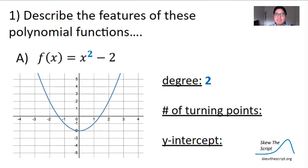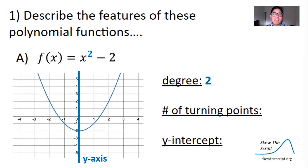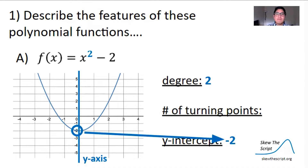Now we'll need the graph to find the number of turning points and the y-intercept. In general, the y-intercept is where a graph crosses the y-axis, or where x equals zero. I'll draw a circle on the y-axis to help find that point. It looks like the graph crosses the y-axis at negative 2, so the y-intercept is negative 2. We could also write this as the point (0, −2), but for today we'll just note the y-value as the y-intercept.